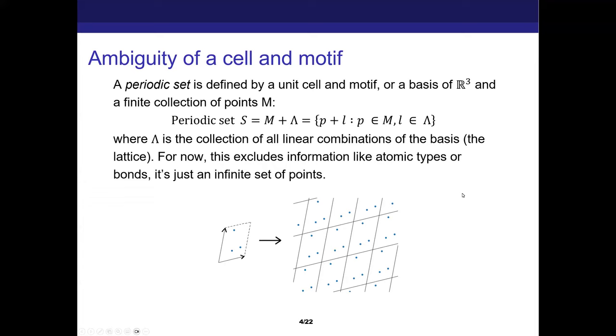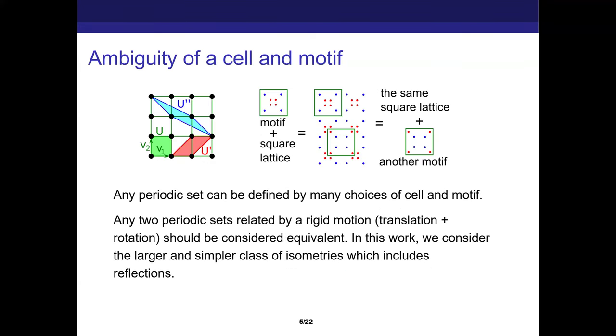It's 2D here, but it can be any dimension. We're usually thinking of three. But this is an ambiguous representation because I can choose many different choices for my unit cell and motif that give rise to the same periodic set of points. And that ambiguity is something we want to snub out from the very start rather than having to deal with it later on.